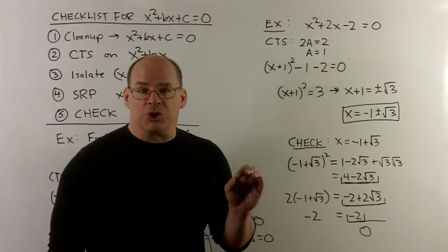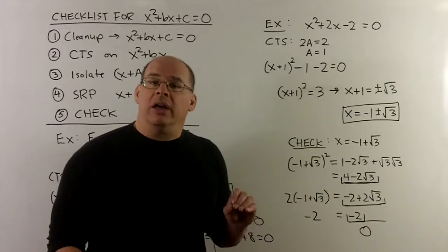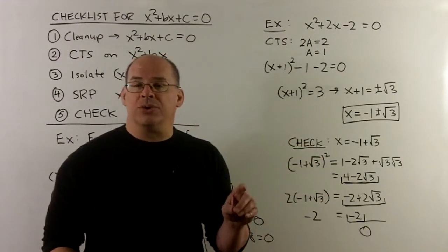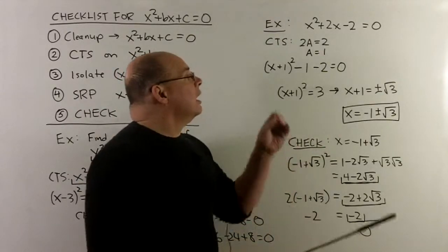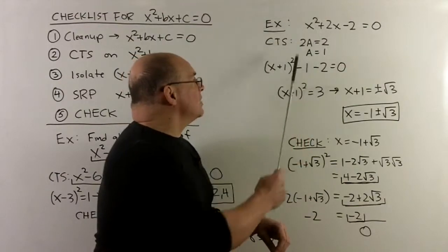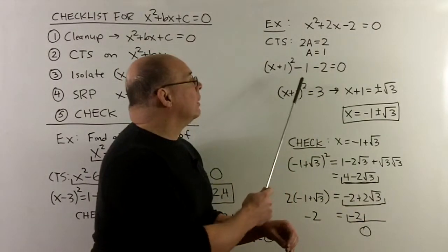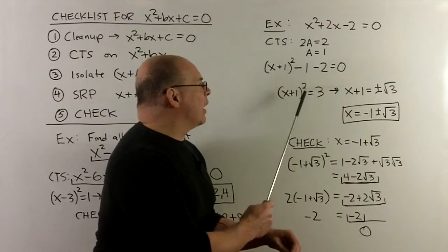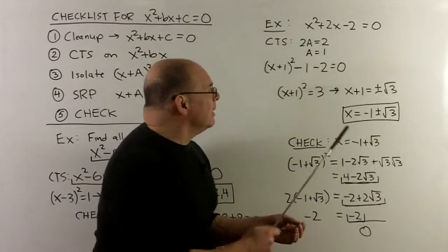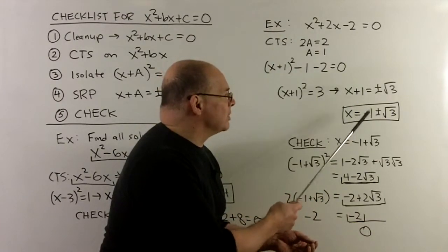Let's take a look at something a bit more strenuous — bringing in radicals in the answers. Note we wouldn't have been able to get solutions here by factoring. Try x squared plus 2x minus 2 equal to zero. Already cleaned up; 2a equals 2, so a equals 1. Completing the square gives x plus 1 squared minus 1; bringing in the minus 2 from the equation, we get x plus 1 squared equal to 3. Square root property gives x plus 1 equal to plus-or-minus square root of 3, so x equals minus 1 plus-or-minus square root of 3.